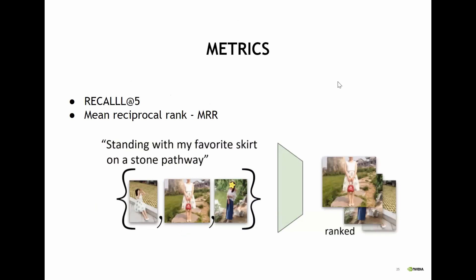To evaluate retrieval performance, we use two metrics. First, Recall@5: given a caption with a learned concept such as 'standing with my favorite skirt on my stone pathway,' we retrieve the top five images and ask whether one of them is the correct intended image. Second, MRR (Mean Reciprocal Rank): we retrieve images and record the rank of the correct image, then average 1 over that rank across samples, measuring overall retrieval accuracy.